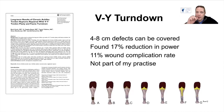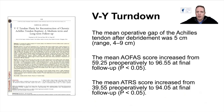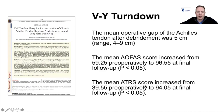A V-Y turndown covers four to eight centimetre defects, though this is not part of my own practice — I usually use allografts. The mean operative gap of Achilles tendon in this paper showed that afterwards the AOFAS score and ATRS score came back up to normal levels, so with long-term follow-up you can get very good results.